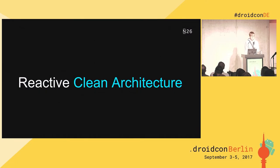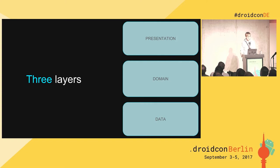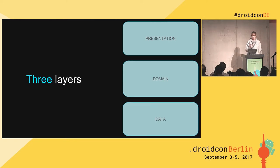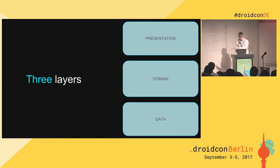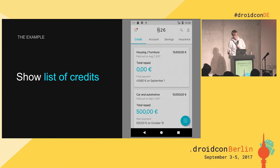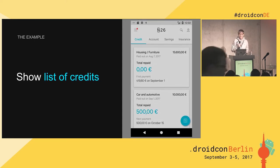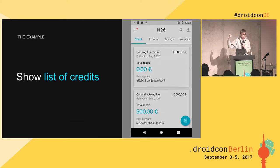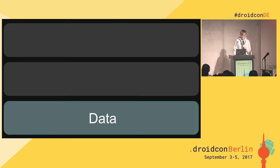The next thing we notice in this title is clean architecture. Most of us are pretty familiar with this already. In Android, this usually means three layers: data, domain, and presentation. We've divided this architecture in these layers as well, so I'll walk you through them. For that, I'd like to use this example — let's try to build a list of credit drafts in a view. We get the credits from some API and present them on a list.